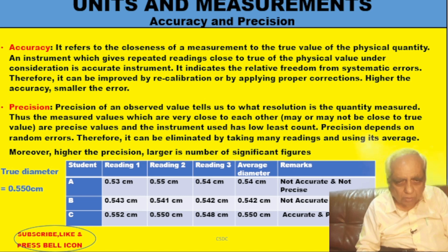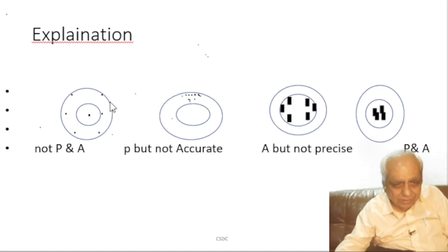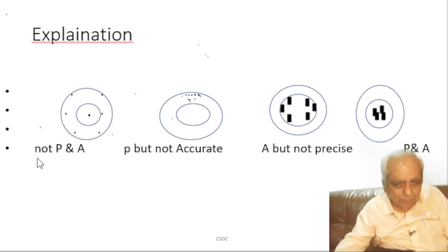The first two important words are accuracy and precision. For a common man these words have the same meaning, but in physics their meanings are different. I will explain from this figure. In the center I have drawn a spot — the bull's eye. I told a shooter to hit at this point. He tried six times and his bullet marks are shown. You can see he is quite away from the bull's eye — not accurate and not precise, every time in different directions.